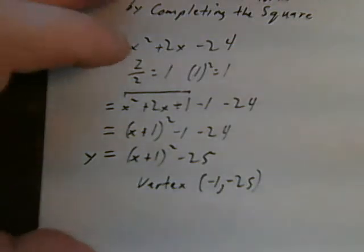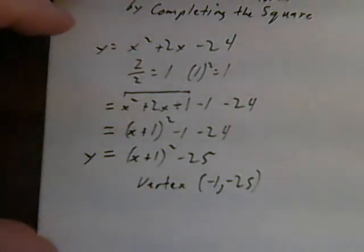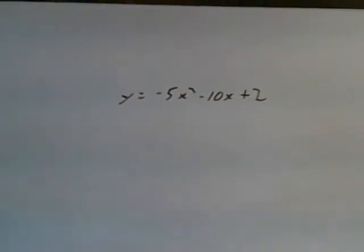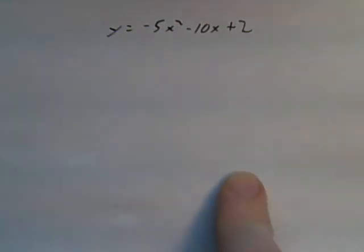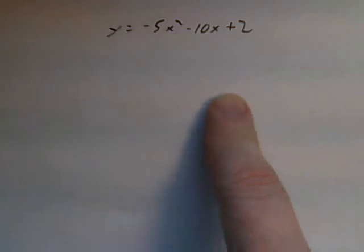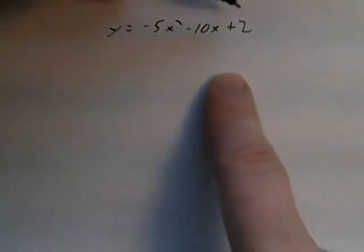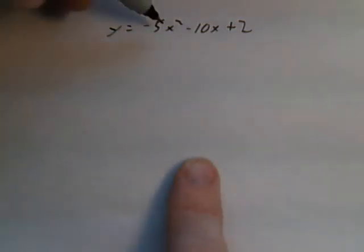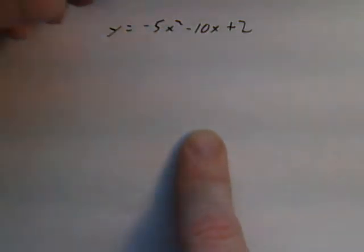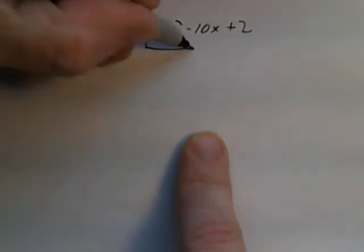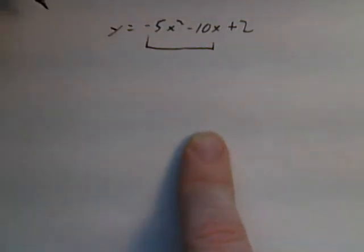Let's look at a harder example that has an a value other than 1. Here I've got y equals negative 5x squared minus 10x plus 2. I know my y intercept is plus 2 and I know it opens down because my a value is negative. The first thing I need to do is to get this negative 5x squared down to an x squared. So I'm going to divide the first two terms by negative 5.